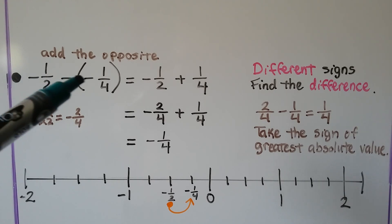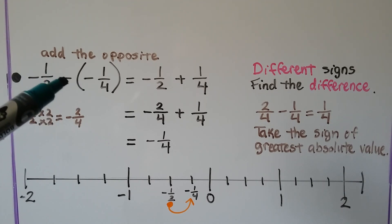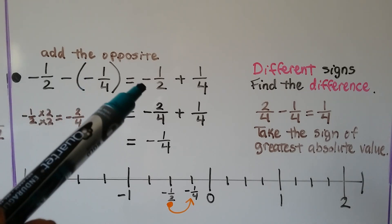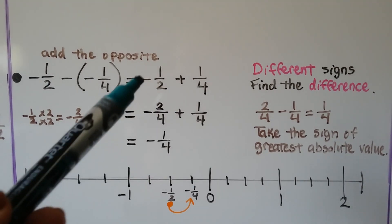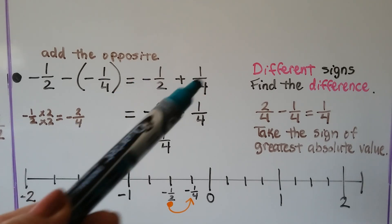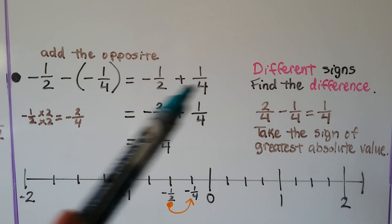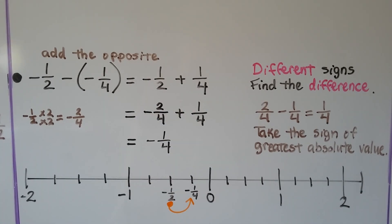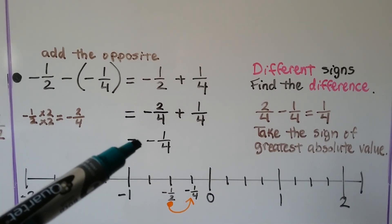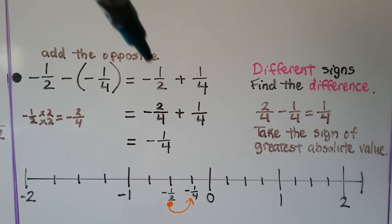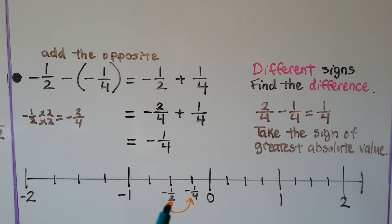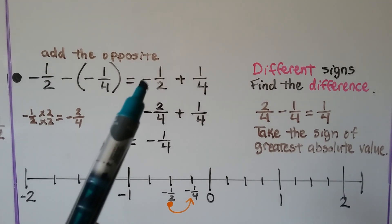Here we have negative 1/2 minus negative 1/4. This is going to turn into a plus sign because we're going to add the opposite. So now we have negative 1/2 plus 1/4. These have different signs, so we're going to find the difference between a half and a fourth. We turn them into fractions with common denominators: 2/4 minus 1/4 gives us 1/4. So we have negative 1/4, because the greatest absolute value is negative 1/2 — it's farther away from 0 than 1/4. On the number line, starting at negative 1/2 and adding 1/4 brings us to negative 1/4. We haven't gone across 0 to the positive side.